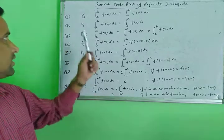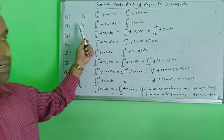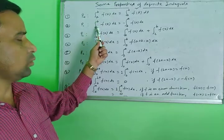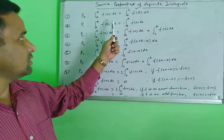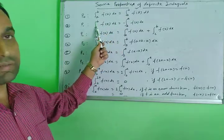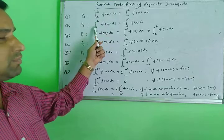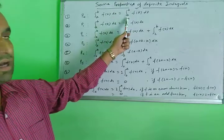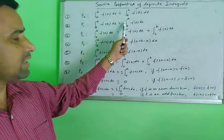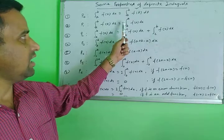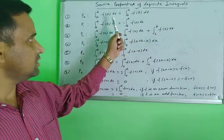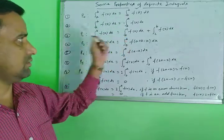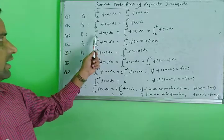The second property is called P1. For the integral from a to b of f(x) dx, if you interchange the limits — converting the upper limit to lower or lower to upper — then a minus sign is introduced. So when you swap upper and lower limits, a minus sign appears.